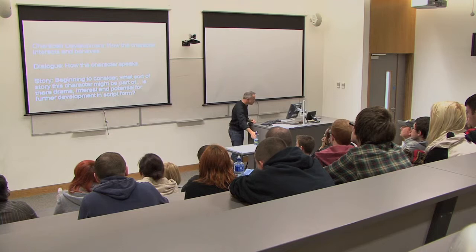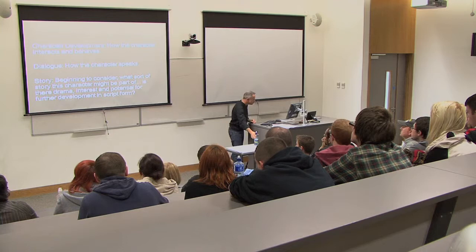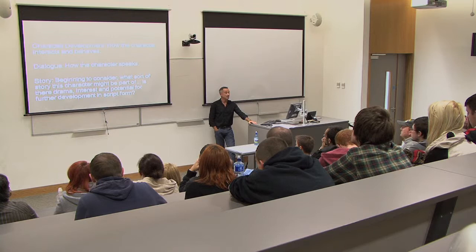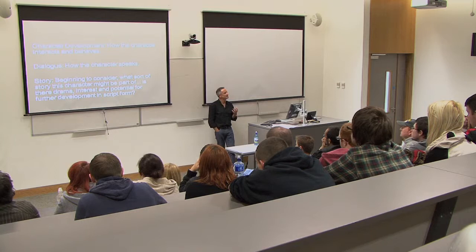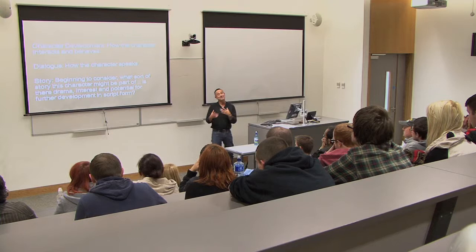What I want them to do then is create a character. I want them to write a fictional character using social media — the character has a Twitter account and a blog. I want them to cast an actor to play this character and film him or her in their own world. We could consider, further down the line, looking at students from the performance studies course here at EKIT and setting that up. The plan is the character will tweet and blog and make video diaries using whatever is available — just a phone would be the best thing. Through this, I see the students learning: character development — how the character interacts and behaves; dialogue — how the character speaks; and story — beginning to consider what sort of story this character might be part of, whether there is drama, interest, and potential for further development in script form.